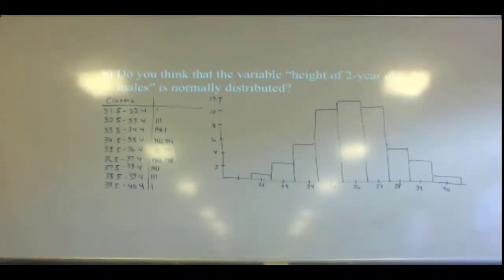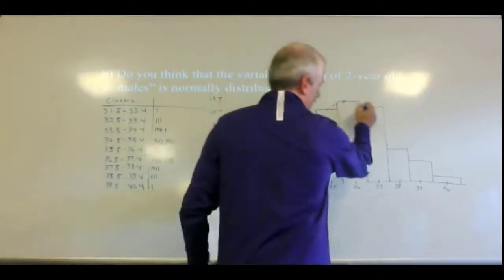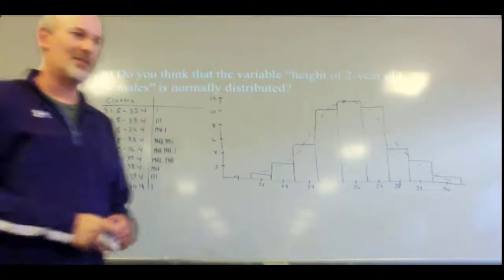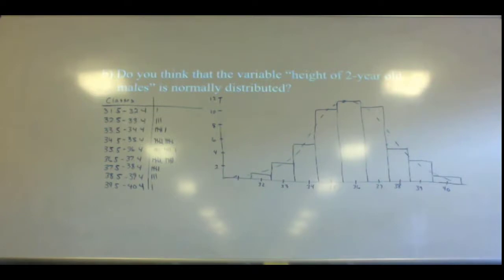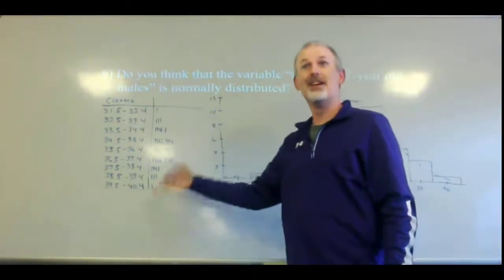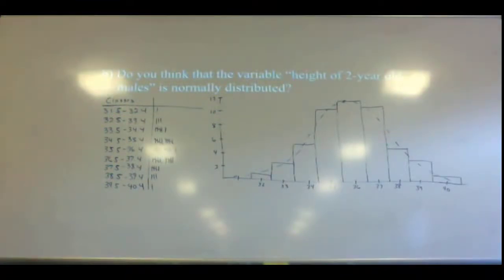What is the point of this question? We're looking at this and asking: do we see that this is a bell-shaped curve? Is this a normal distribution? Yes. If you made the curve, we can see how it would look like this. The question is, do you think that the variable height of two-year-old males is normally distributed? By looking at this data, it definitely looks normally distributed — bunched in the middle and less on the outsides. Questions on that?